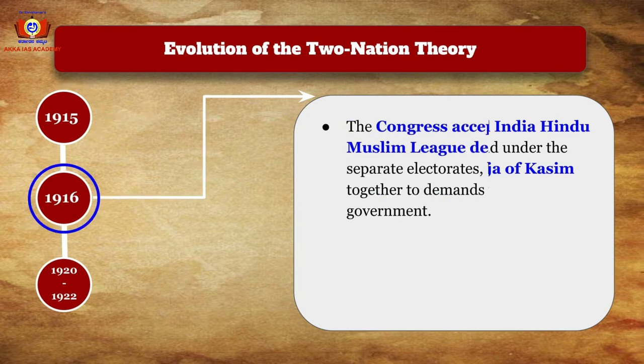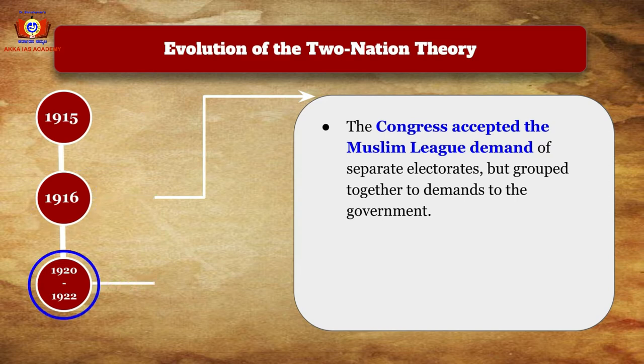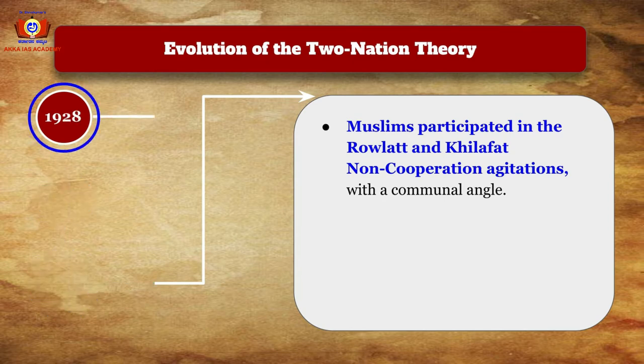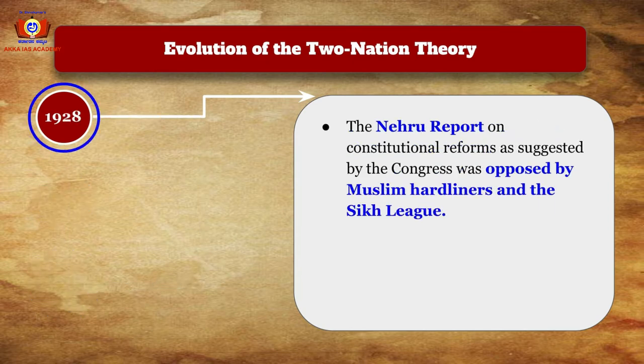The Hindu Mahasabha's first session was held in 1915 under the leadership of the Maharaja of Kasim Bazar. The Congress accepted the Muslim League's demand for separate electorates. In 1916, the Muslim League also participated in the Rowlatt and Khilafat Non-Cooperation agitations, which had a communal angle, during the years 1920–22.